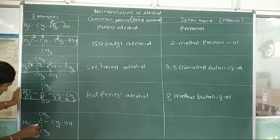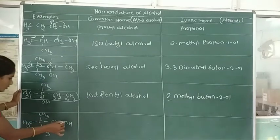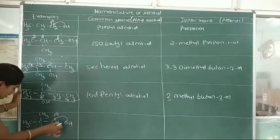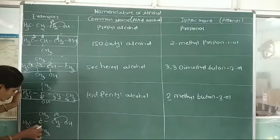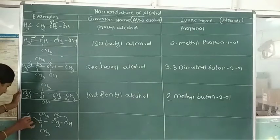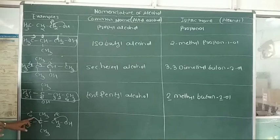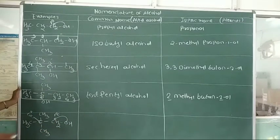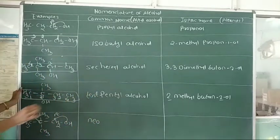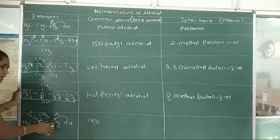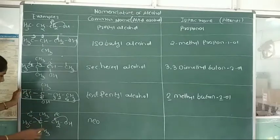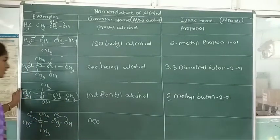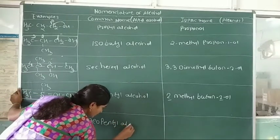Next example: C(CH3)3-CH2OH. Here the hydroxy group is attached to the primary carbon atom. But this carbon is attached to 4 other carbon atoms — it is called a quaternary carbon atom. When the hydroxy group is attached next to a quaternary carbon atom, we use the prefix 'neo'. With 1, 2, 3, 4, 5 carbon atoms, the common name is neopentyl alcohol.